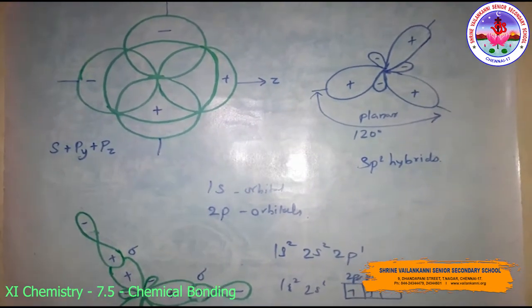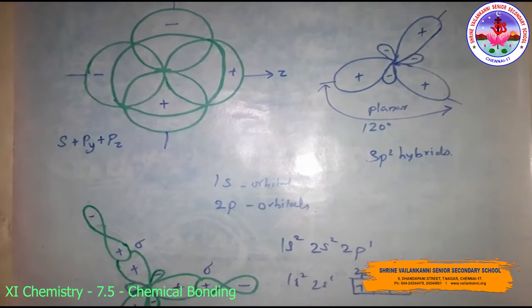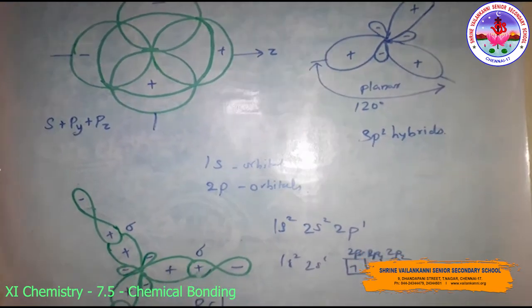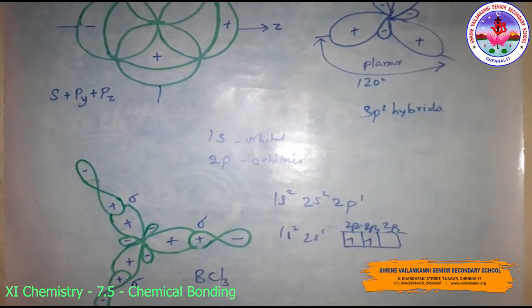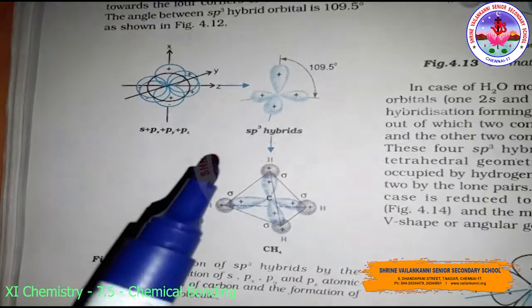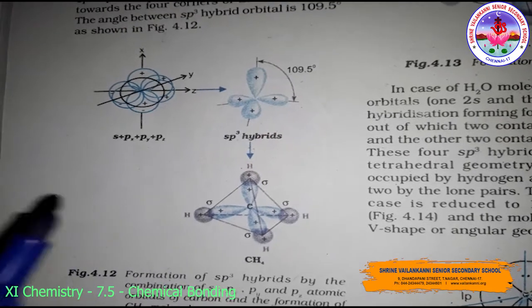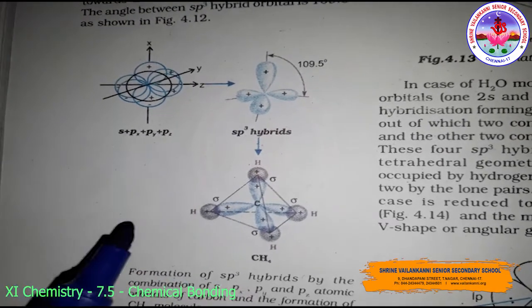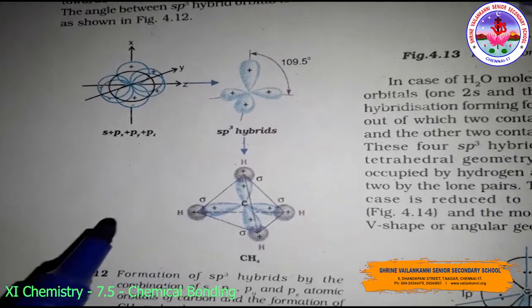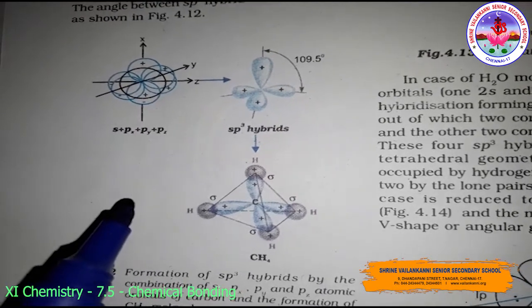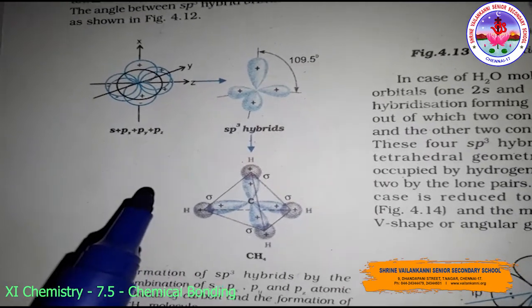The diagram shows the sp2 hybrid shape and the formation of the boron trihalide molecule. Next is sp3 hybridization. This type of hybridization can be explained using the methane molecule. There is mixing of one s orbital and three p orbitals of the valence shell to form four sp3 hybrid orbitals of equivalent energies and shape.